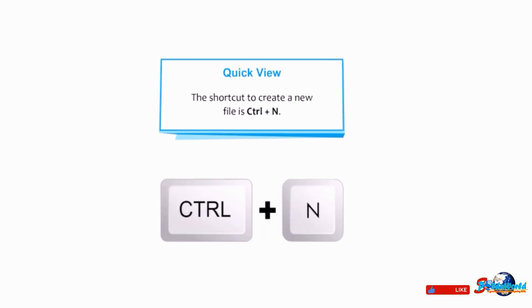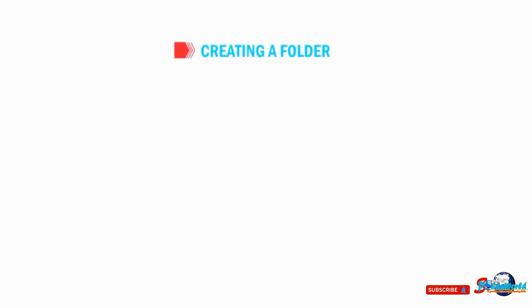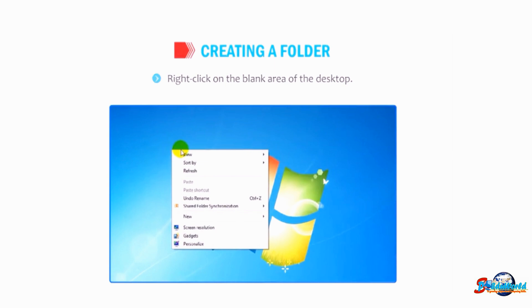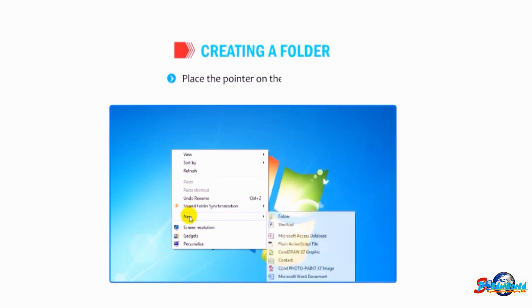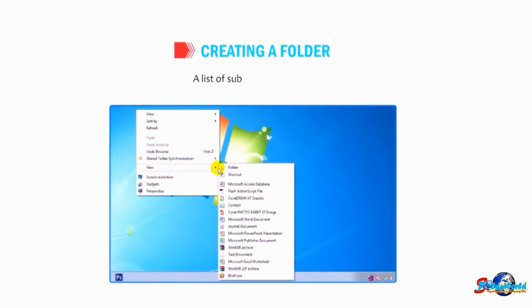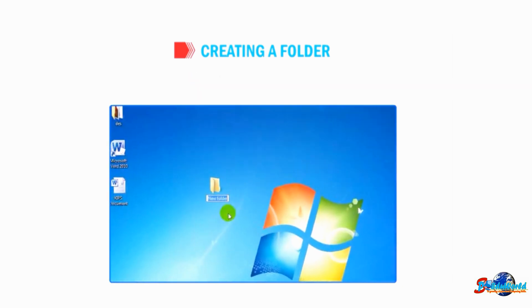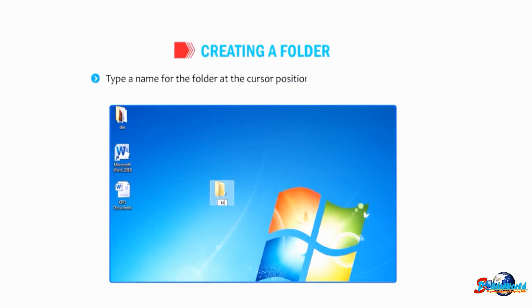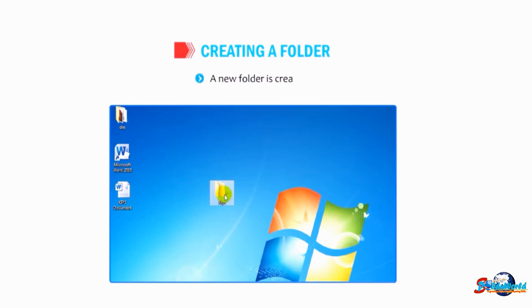Let us find out how to create a folder. Right-click on the blank area of the desktop — a shortcut menu appears. Place the pointer on the New option; a list of sub-options appears. Click on the Folder option — a new folder icon will be displayed on the desktop. Type a name for the folder at the cursor position and press the Enter key. A new folder is created.